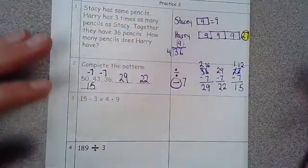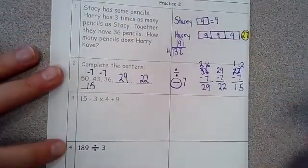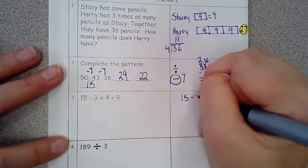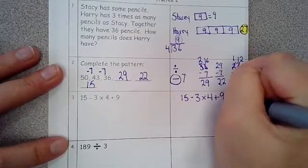Okay, seems simple, but I'm telling you, you're going to miss it if you don't focus. Alright, for this one, we have 15 minus three times four plus nine.